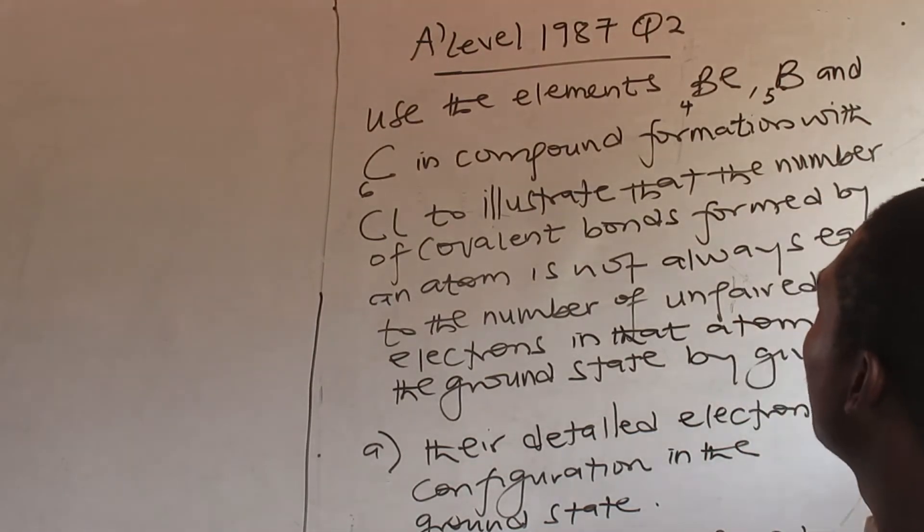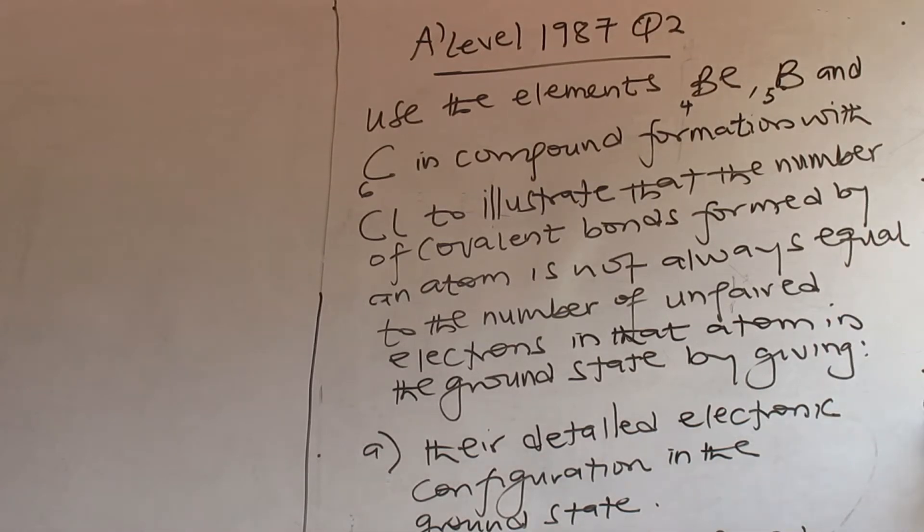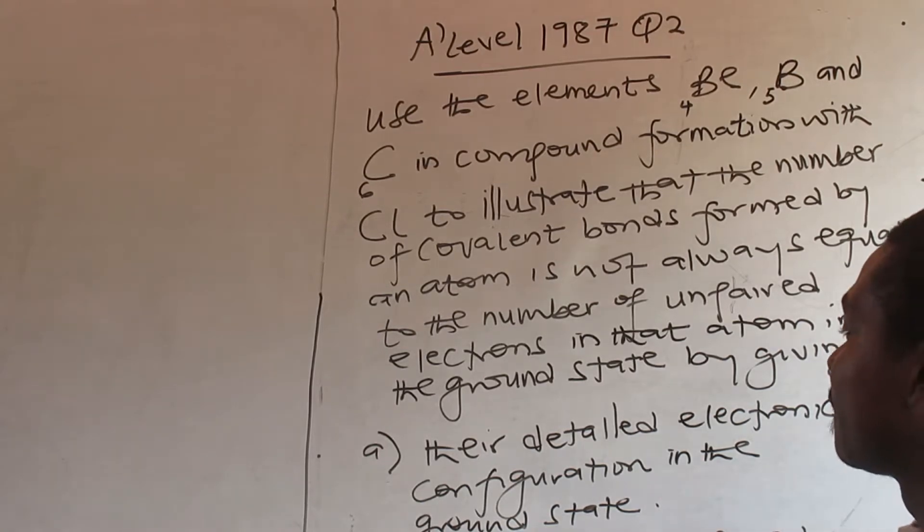Use the elements boron and carbon in compound formation with chlorine to illustrate that the number of covalent bonds formed by an atom is not always equal to the number of unpaired electrons in that atom in the ground state. Given a detailed configuration in the ground state.